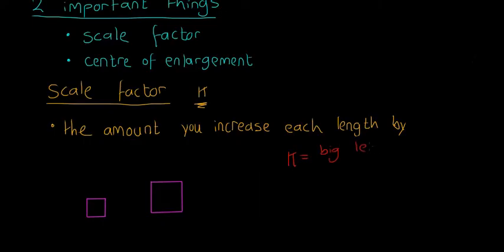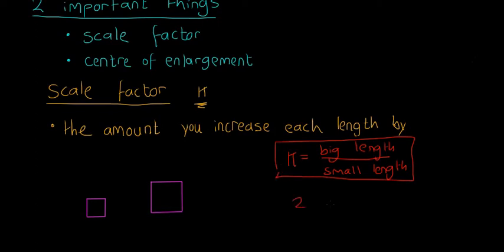The scale factor is called k. The way you find the scale factor is you say k is equal to the big length divided by the small length.